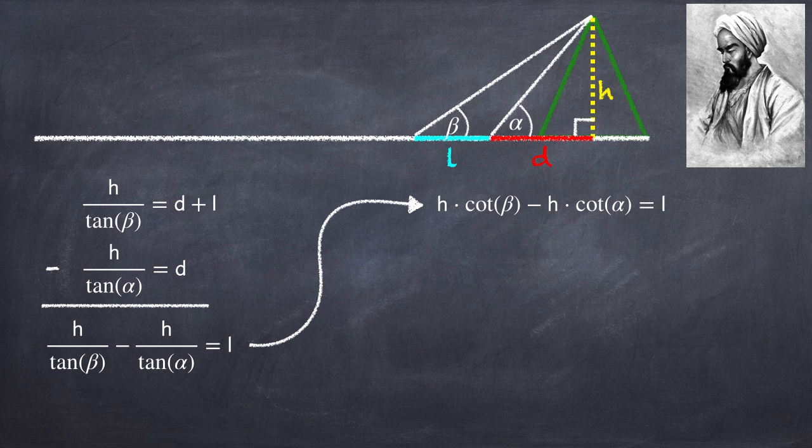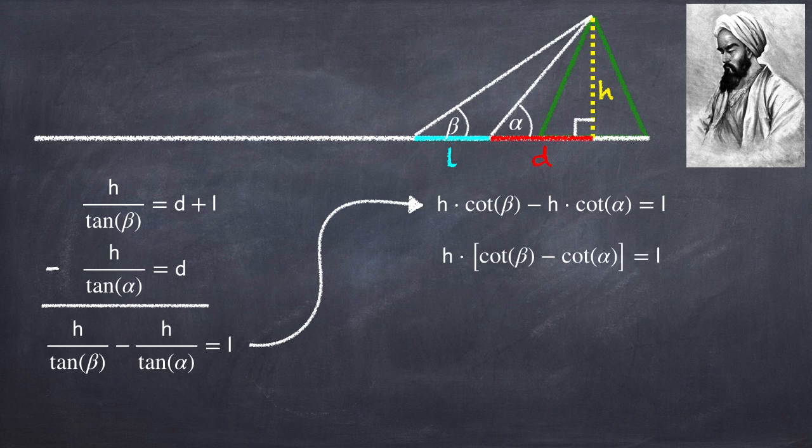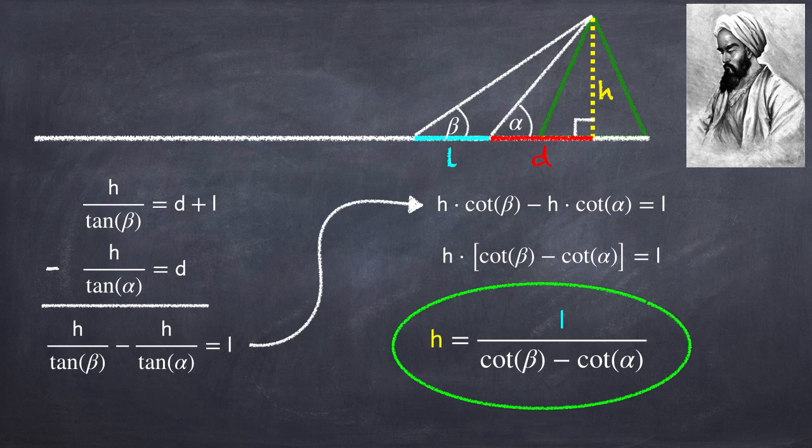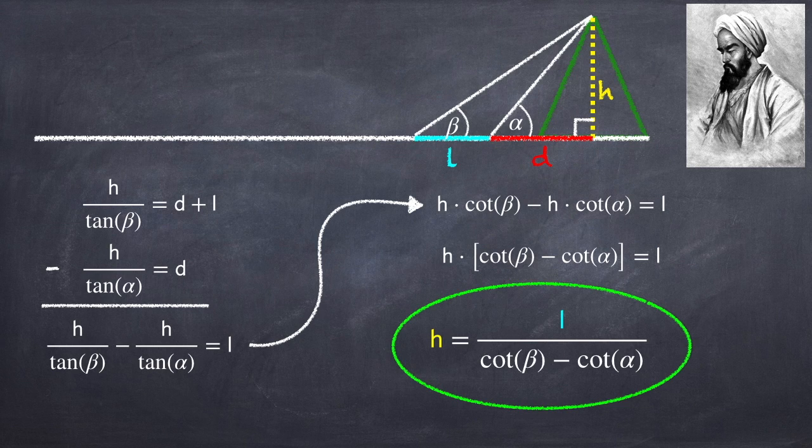I can pull out an h from the left side of the equation as it's a common factor. And then I can divide by cotangent beta minus cotangent alpha to find that the height of the mountain is l divided by cotangent beta minus cotangent alpha.